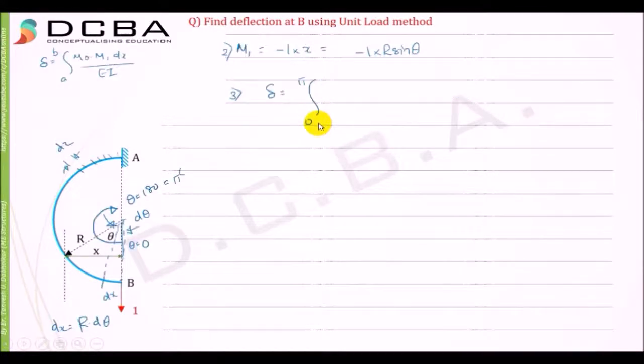Into M1 equation is minus r sin theta, into dx is r d-theta, divided by EI. So it is equal to w into r cubed upon EI, integration of zero to pi, sin squared theta d-theta.